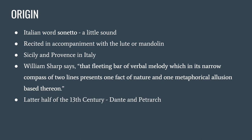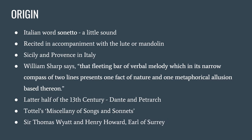The earliest sonnets of definitely recognizable form were written by the great Italian poet Dante and Petrarch in the later half of the 13th century. The first English sonnets appeared in Tottel's Miscellany of Songs and Sonnets, a collection of lyrics and sonnets written by various known and unknown poets of the 16th century. The two well-known contributors were Sir Thomas Wyatt and Henry Howard, Earl of Surrey.